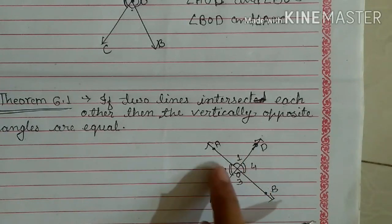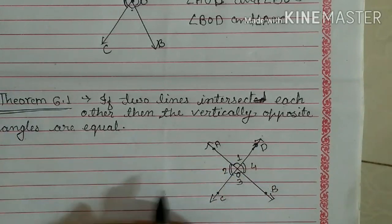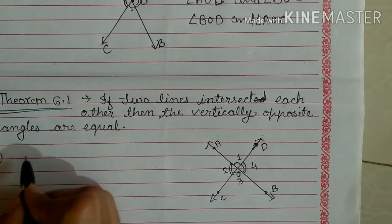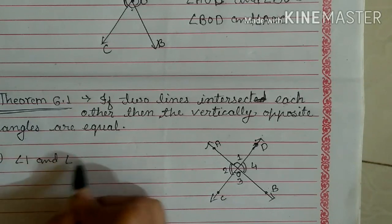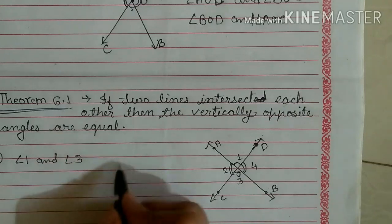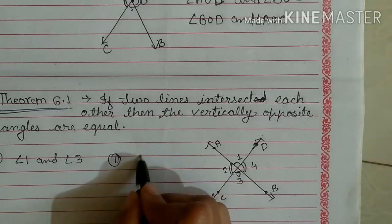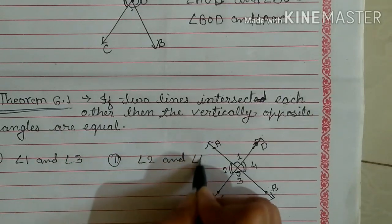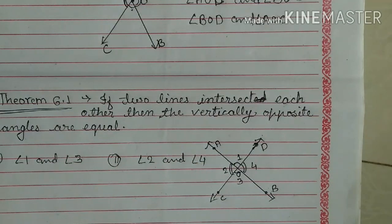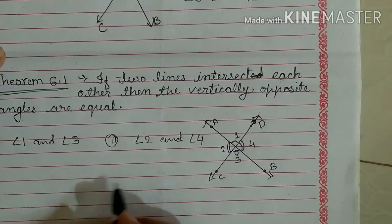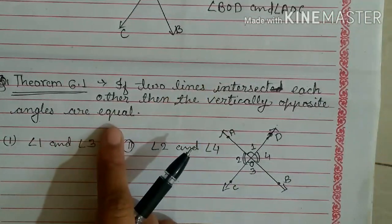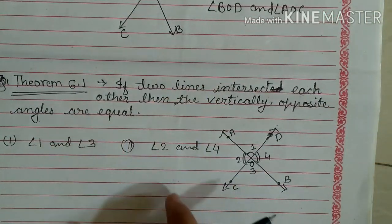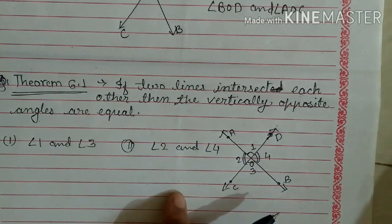यहां पर मैंने angles के names दे दिये हैं: angle 1, angle 2, angle 3 and angle 4. So first, angle 1 and angle 3 are one pair of vertically opposite angles, and second, angle 2 and angle 4 are the other pair. Now let's start the proof. जब यह theorem हम solve करते हैं, तो हमको सबसे पहले जो given होता है वो यहां लिखना होता है।